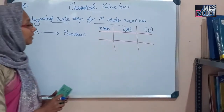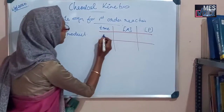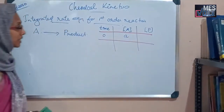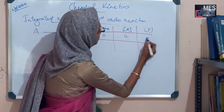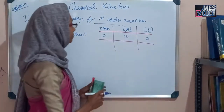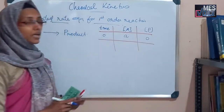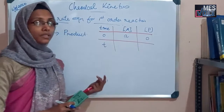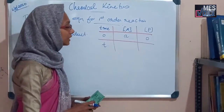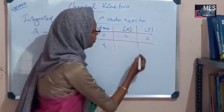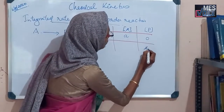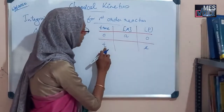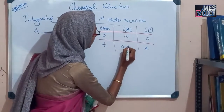Suppose, before starting the reaction, that is at time equal to 0, the concentration of A is represented as A and the concentration of product is equal to 0. That is, before starting the reaction, no product is formed. Then, after starting the reaction, at a particular time T, suppose x moles of A is converted into product P, and the concentration of product is equal to X. That means, at that time, the concentration of A is equal to A minus X.